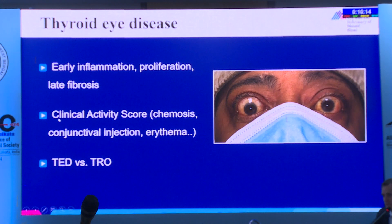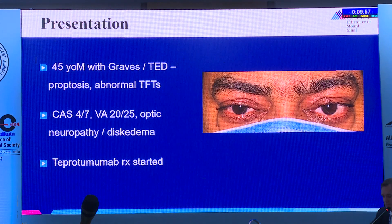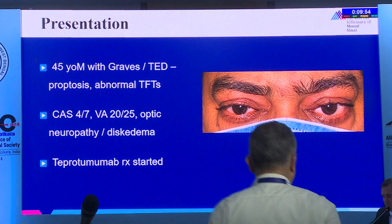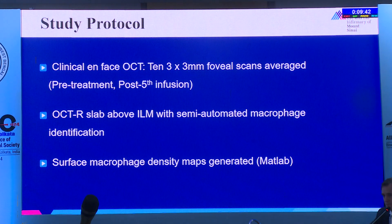What does this have to do with thyroid eye disease? We measure disease clinically using clinical activity score through phases of inflammation, proliferation, and fibrosis—but maybe something going on inside the eye is trackable. Example patient: Graves' disease with optic neuropathy started on IV teprotumumab, with high-magnification scans taken around the fovea pre- and post-infusion to look at these cells.